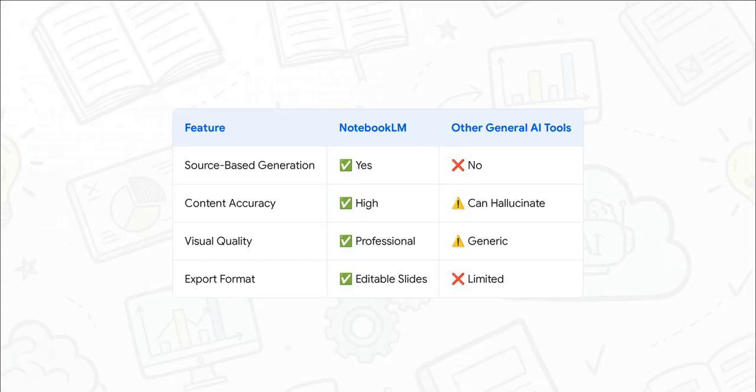Let's put this head-to-head for a second because this really spells it out. That source-based generation? That's unique to Notebook LM, which leads to high content accuracy with no hallucinations, unlike other tools that can just make things up. This also means you get visuals that are actually rich with context, not just generic stock photos. And when it's all done, you get a fully editable Google slide deck. It's a complete professional workflow.